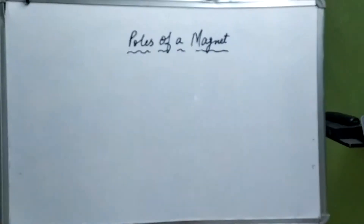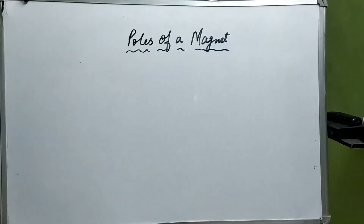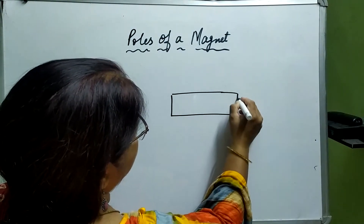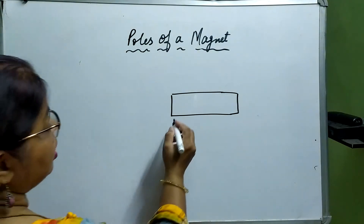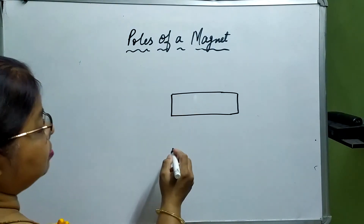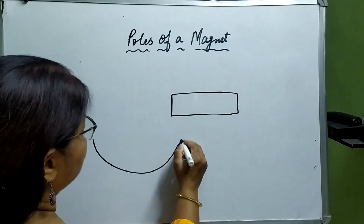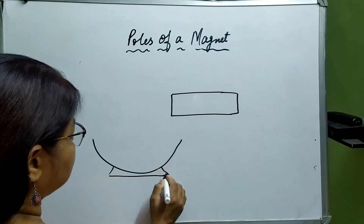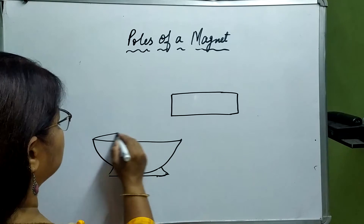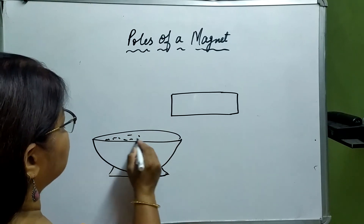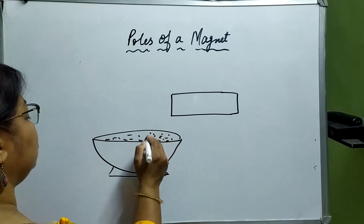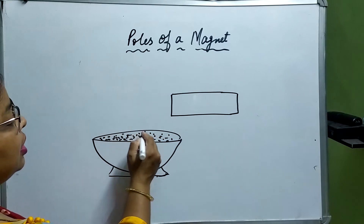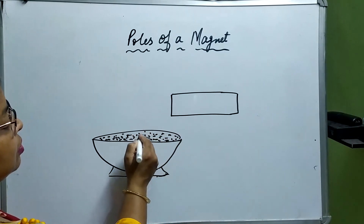Let us start with an activity. We have taken a Bar Magnet and we put some Iron Filings in a bowl. Iron Filings are just like crushed iron, or you can say scrape of the iron.